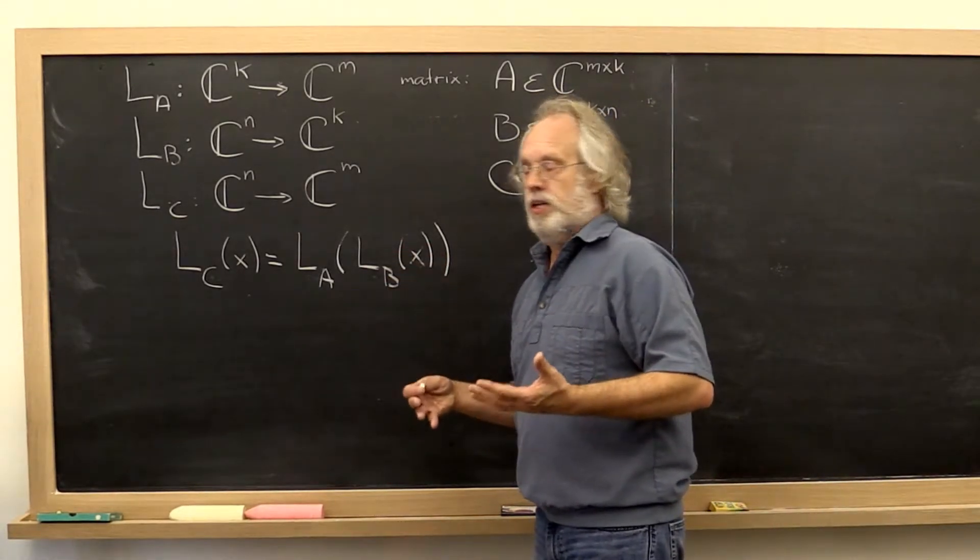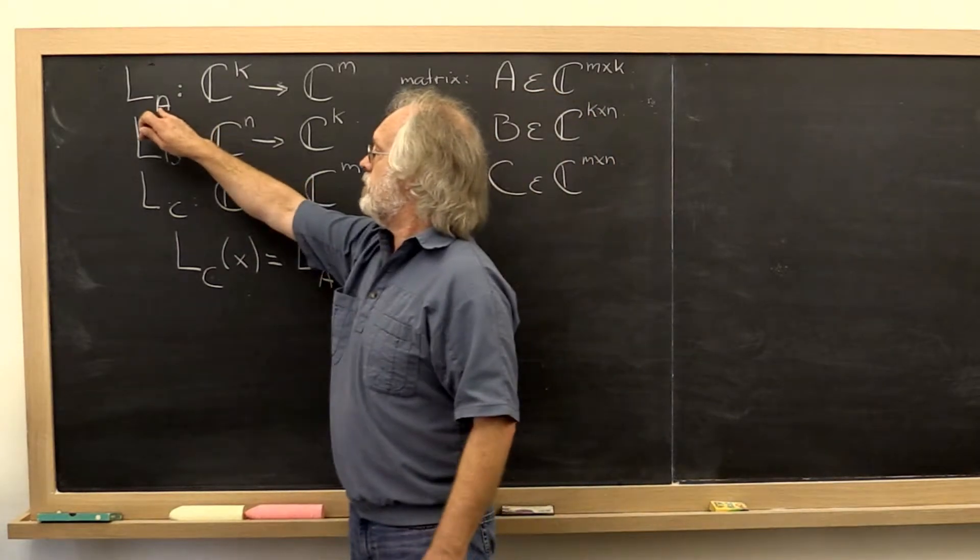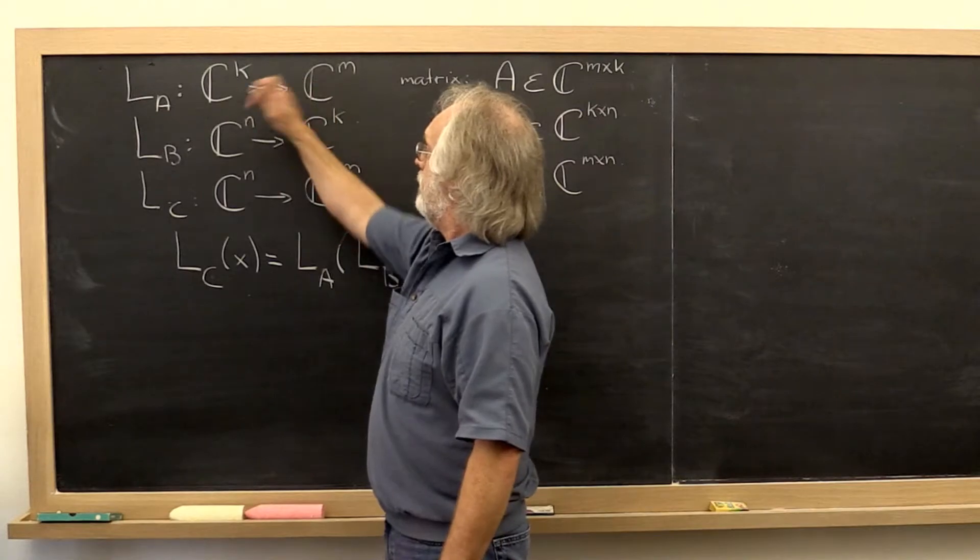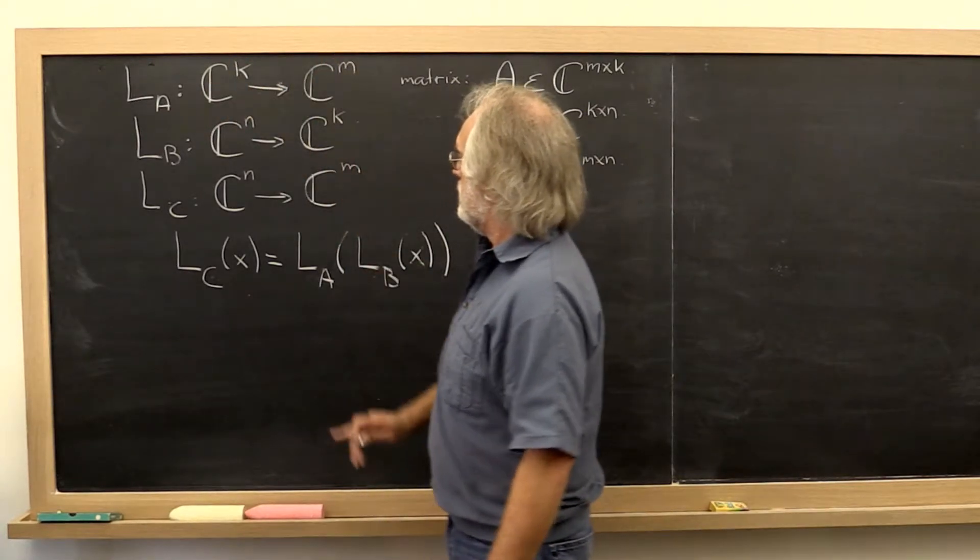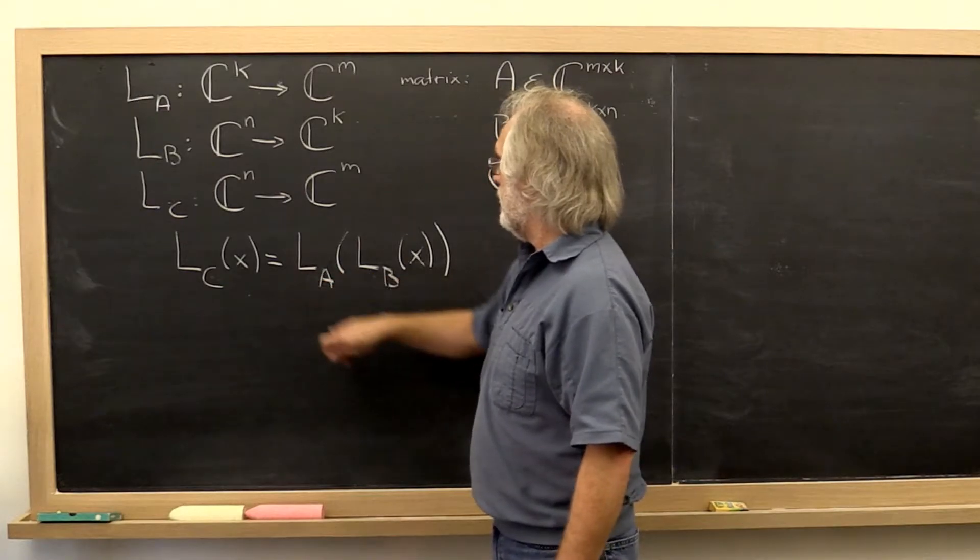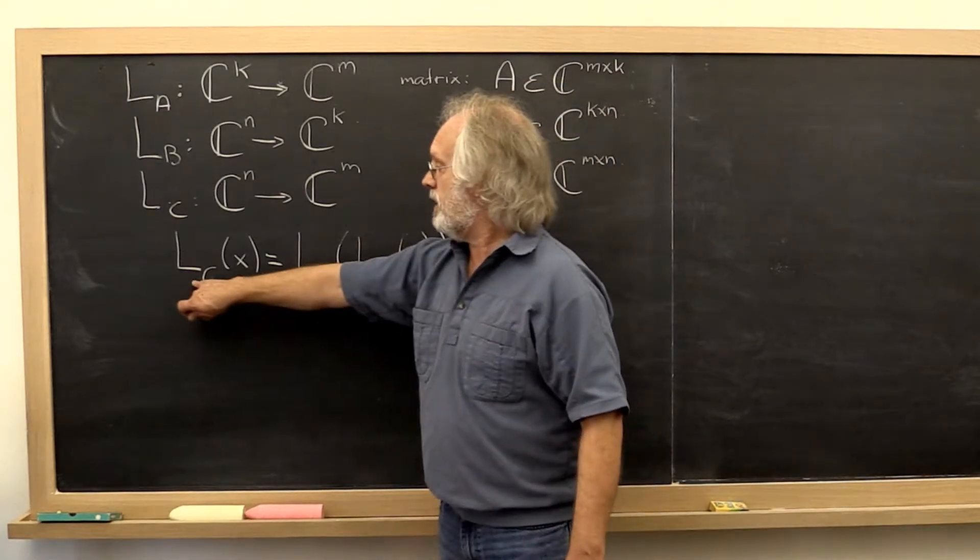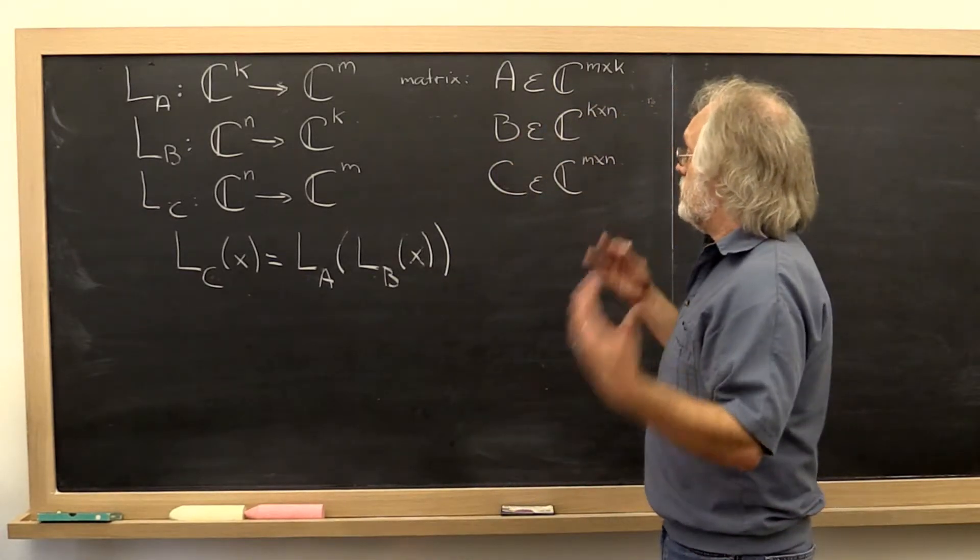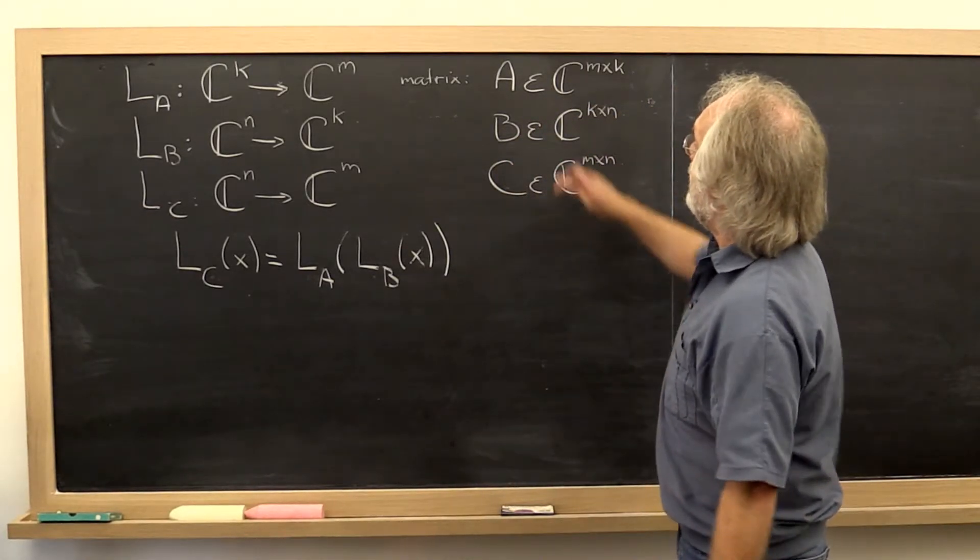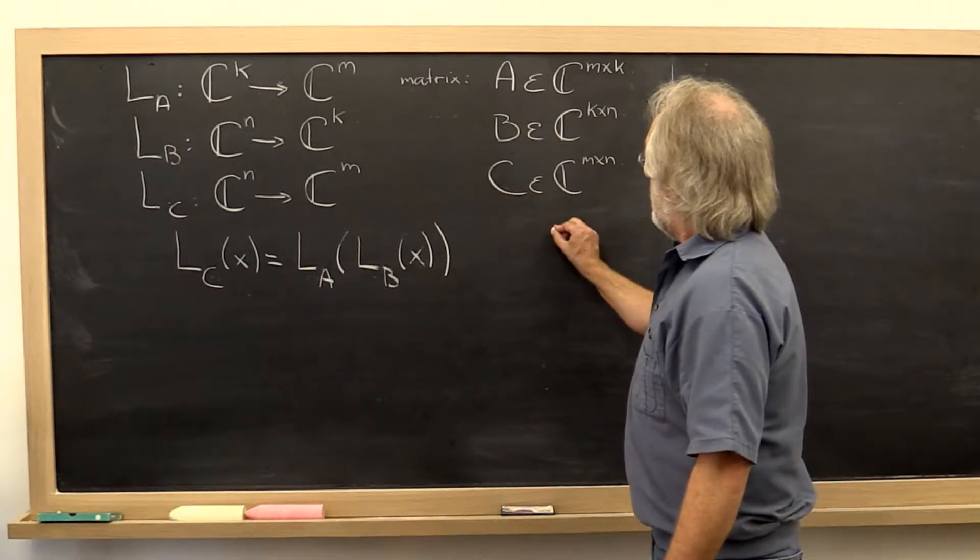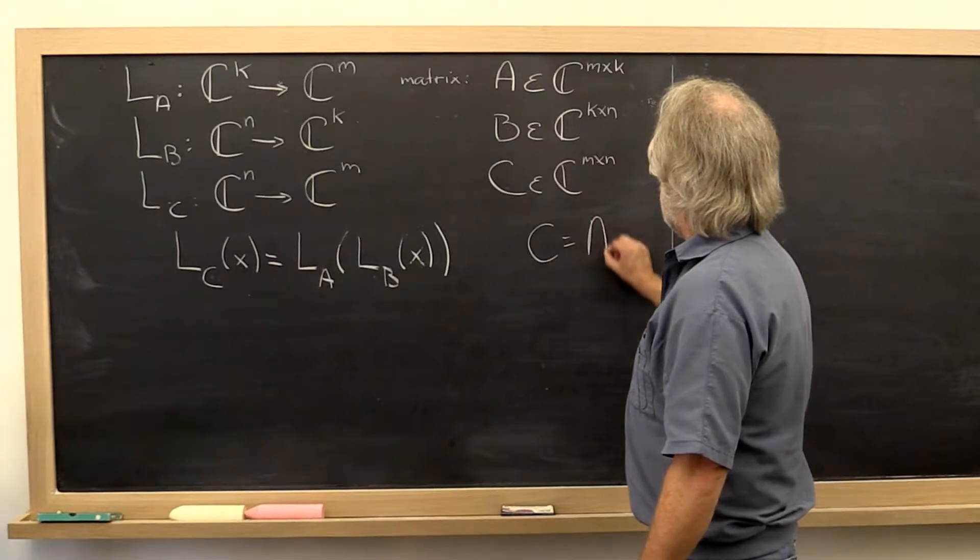Let's go back to linear transformations. So we have a linear transformation L_A, L_B, L_C, taking vectors from one size to another size, but in such a way that you can compose L_A with L_B to create the linear transformation L_C. We saw that that's equivalent to saying we have a matrix A, a matrix B, and a matrix C, and C is equal to A times B.